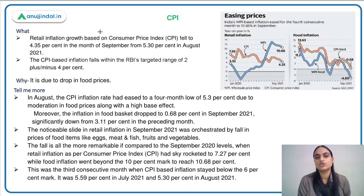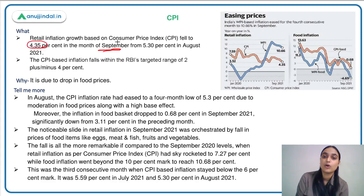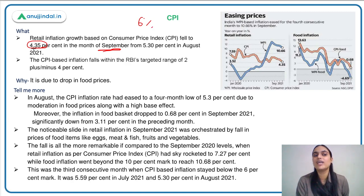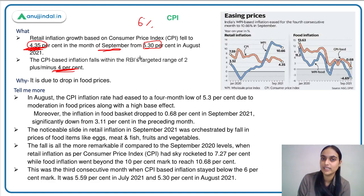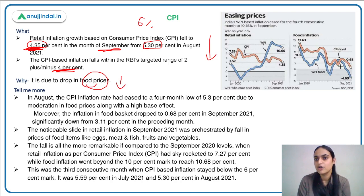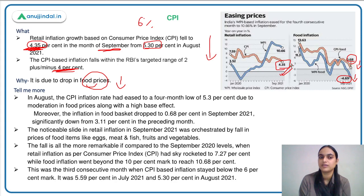Moving ahead to CPI levels — retail inflation has also reduced. It is 4.35% for September. A few months back it was beyond RBI's threshold of 2 to 6%, exceeding 6%. Then it came close to 6% in the remaining months, and now it has reduced significantly to 4.35%. In August, it was at 5.3%. So CPI has decreased and it is within RBI's threshold. Because of this, the RBI has got a boost to continue with its accommodative stance. In August, CPI eased to a 4-month low at 5.3%, and now it is at a 5-month low of 4.35%.